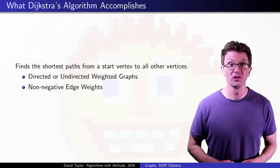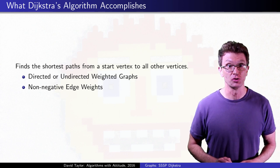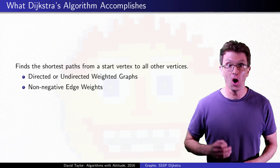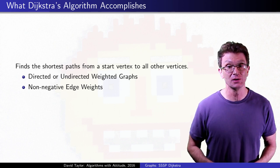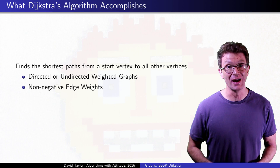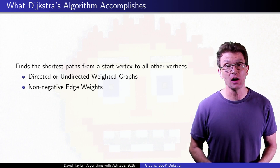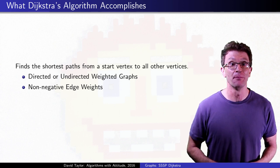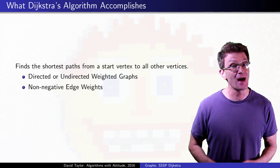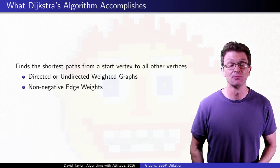Dijkstra's algorithm can find the shortest distances and shortest path tree from any vertex to all other vertices in any directed or undirected weighted graph with no negative weight edges. It generally runs much faster than the Bellman-Ford algorithm because it never needs to relax any edge more than once.